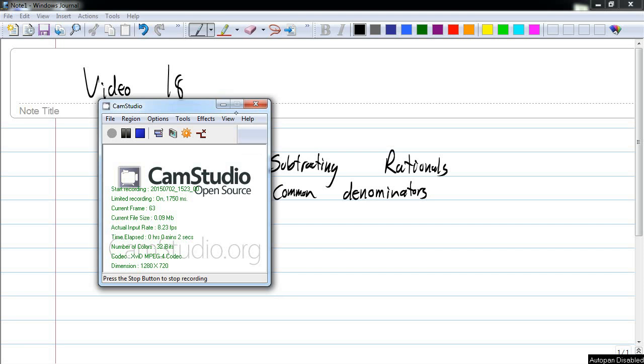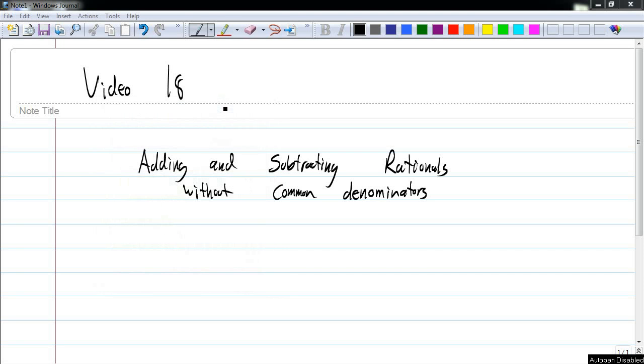Hey kids, this is Mr. Cozy and this is video 18 where we will look at adding and subtracting rational expressions that do not already have common denominators. Yesterday we looked at the example where we do have common denominators, here we don't.